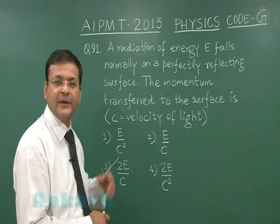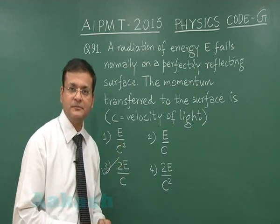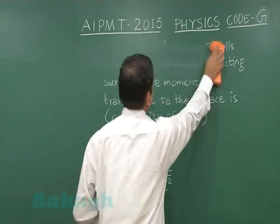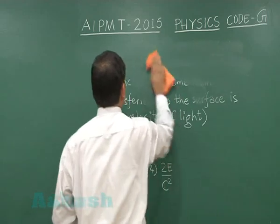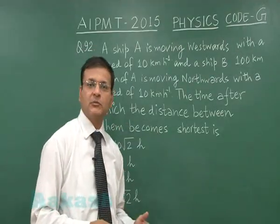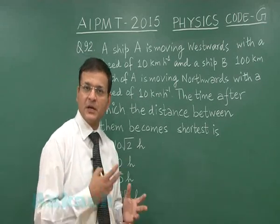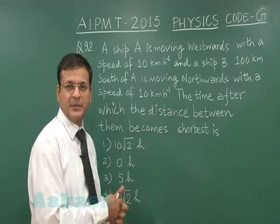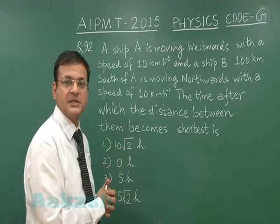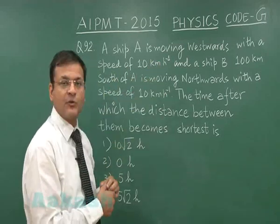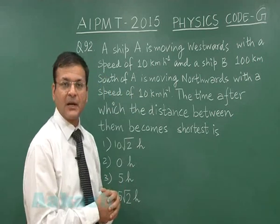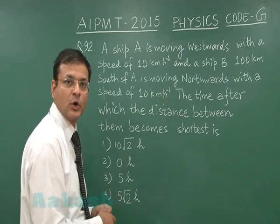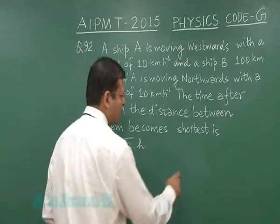Now let us move to the next question, that is question 92. This question is one of relative velocity, and that too motion in a plane. This is a very standard question — if you look at the previous AIEEE papers, you will find this particular question figuring there. A ship A is moving westwards with a speed of 10 km/h and a ship B, 100 km south of A, is moving northwards. If you try to draw the picture of this, it can be something like this.